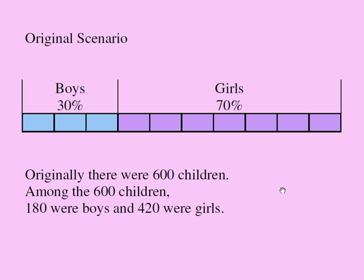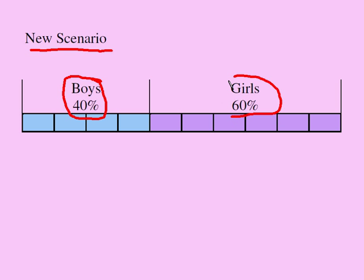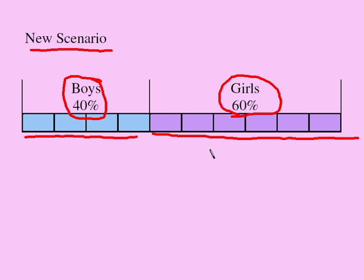When a bunch of boys come in, the total number of girls doesn't change. After a bunch of boys join — the new scenario — 40% of the kids are now boys and 60% of the kids are now girls. Because we have a larger number of boys, the percentage of boys goes up. So now I have 40% boys and 60% girls.